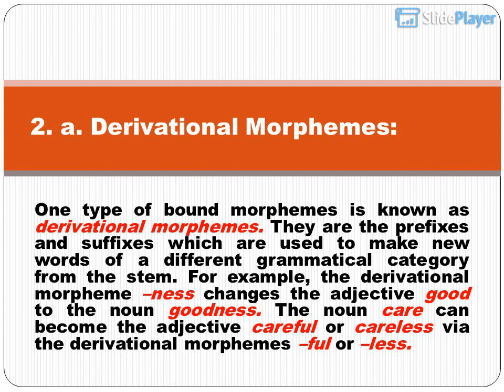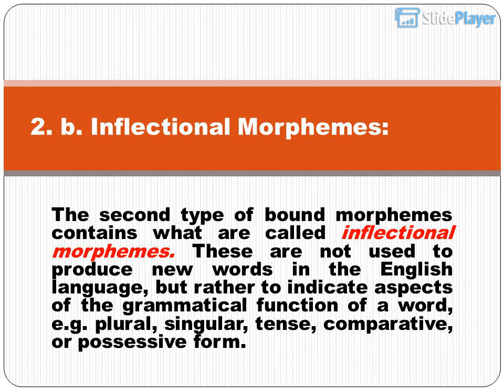Derivational morphemes: one type of bound morpheme is known as derivational morphemes. They are the prefixes and suffixes which are used to make new words of a different grammatical category from the stem. For example, the derivational morpheme 'ness' changes the adjective 'good' to the noun 'goodness'. The noun 'care' can become the adjective 'careful' or 'careless' via the derivational morphemes 'ful' or 'less'.